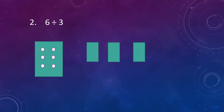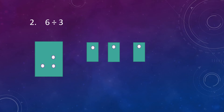Our second example is 6 divided by 3. Here 6 dots are given and we have to divide them equally between three boxes. So let's begin — put a dot in each box. Take a dot and put it in the first box, then take a second dot and put it in the second box, then take a third dot and put it in the third box.